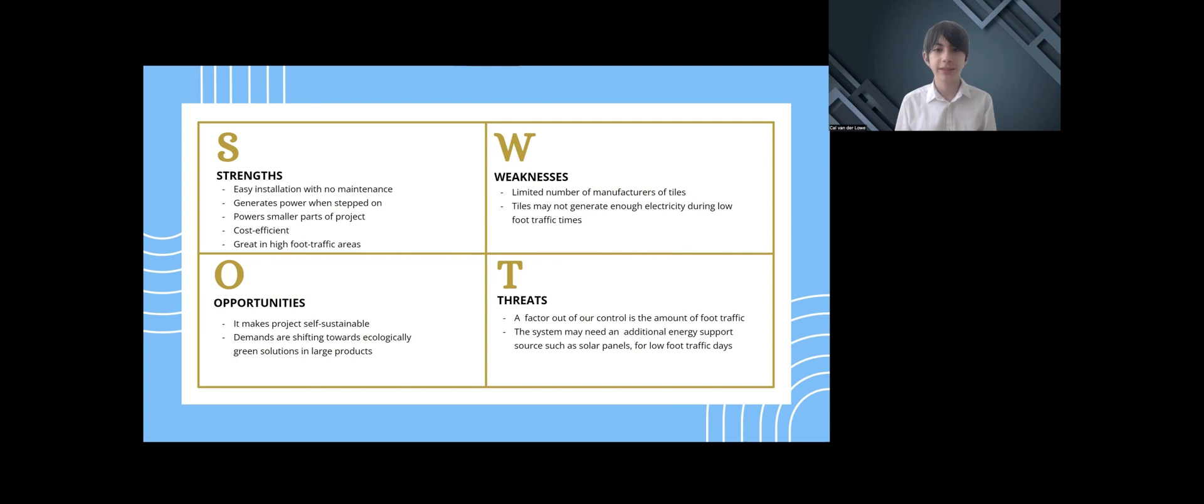Let's start with strengths and opportunities. Kinetic tiles like those manufactured by PaveGen are easy to install, are cost efficient at roughly $70 per square foot, and are durable lasting up to 20 years without maintenance. We see the use of kinetic tiles as an opportunity for cities to expand projects to be more self-sustainable. Weaknesses include having limited sources for kinetic tiles. However, this is changing as more manufacturers come to the market and bring down the cost. Another threat includes low foot traffic, which can be mitigated by having backup solar panels or other self-sustaining energy sources.